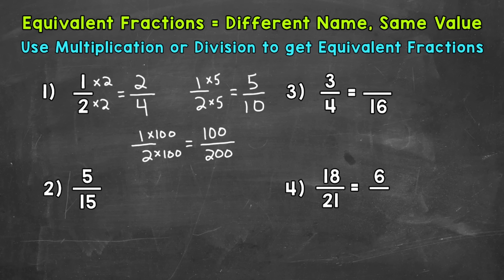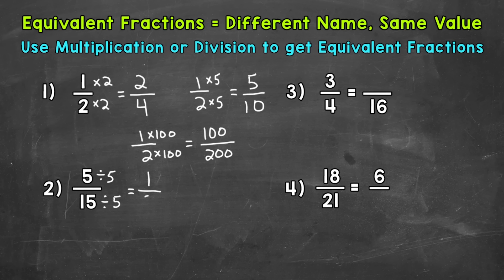Let's move on to number 2, where we have 5 fifteenths. For 5 fifteenths, we can use multiplication or division. We can use division because we have something we can divide both 5 and 15 by — we can divide both by 5. So 5 divided by 5 gives us 1, and 15 divided by 5 gives us 3. So 1 third is equivalent to 5 fifteenths.